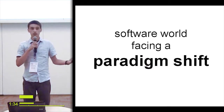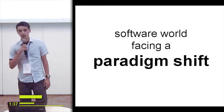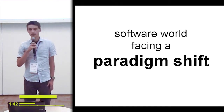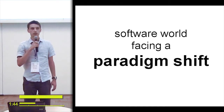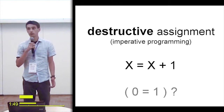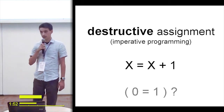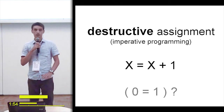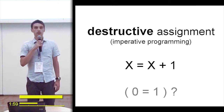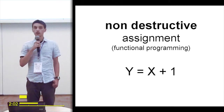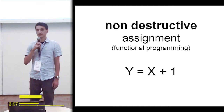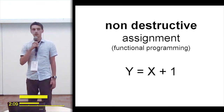Most programmers use so-called imperative programming languages, where an equation like x = x + 1 is perfectly fine. It makes a mathematician cry, but programmers are fine with it. They will need to change and start using functional programming languages, where the equation looks different — mathematicians are happy, but programmers cry because it's not the way they've been doing things for decades.